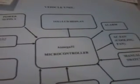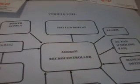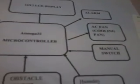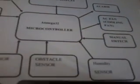The block diagram shows the transmitter unit and the receiver unit. In the transmitter session we are using an ATmega32, a 16x2 LCD display, one Zigbee module, an alarm, cooling fan, manual switch, humidity sensor, obstacle sensor, and CO2 sensor. This is the vehicle section.